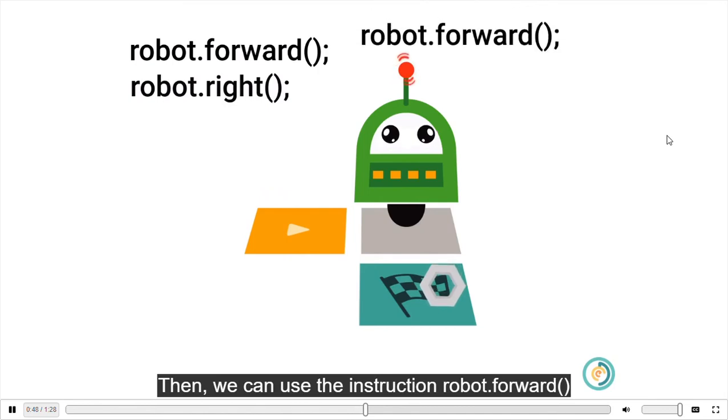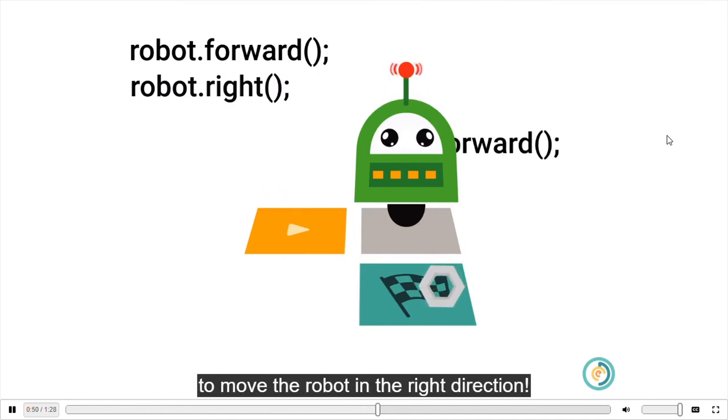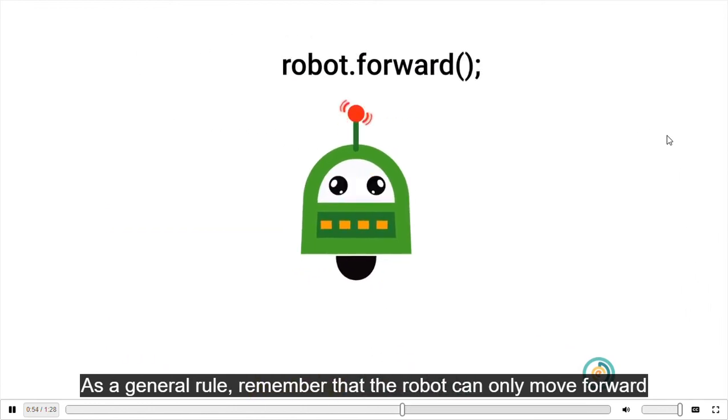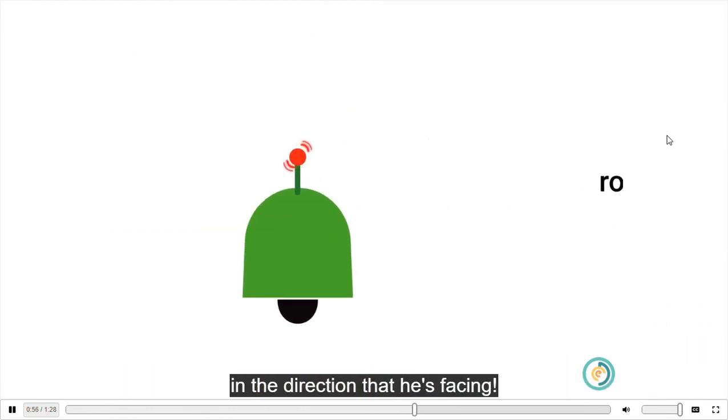Then, we can use the instruction robot.forward to move the robot in the right direction. As a general rule, remember that the robot can only move forward in the direction that he's facing.